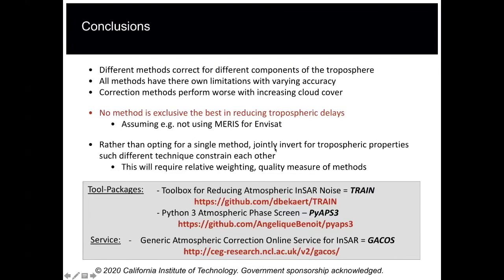That is probably where the community is going in the future. There are different packages available to correct your tropospheric delays: TRAIN, IPS3, and the GACOS service, where you provide a bounding box and download the product. I really recommend going to look at the full presentation for additional information, and feel free to ask questions in the chat or by email.